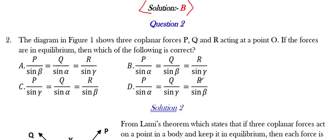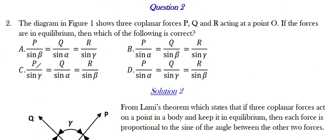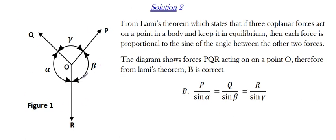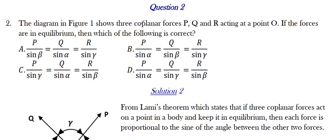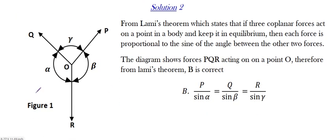Let's move now to solving question 2. Question 2 reads: the diagram in figure 1 shows three coplanar forces P, Q, and R acting on a point O. If the forces are in equilibrium, then which of the following is correct? We are given options A, B, C, and D. These are coplanar forces that act on the same plane and act at the common point O.